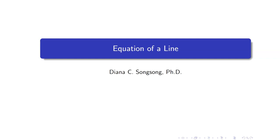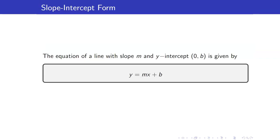In this lesson, we will be discussing equations of lines. Let us recall that the equation of a line with slope m and y-intercept b is given by y equals mx plus b. The coefficient of x is the slope and b is your y-intercept.